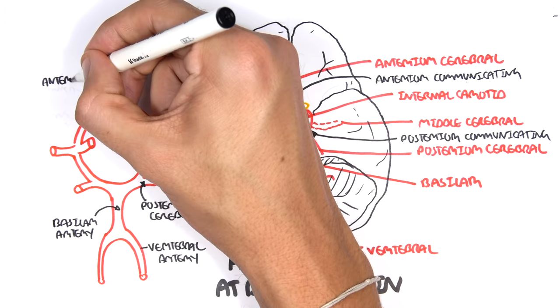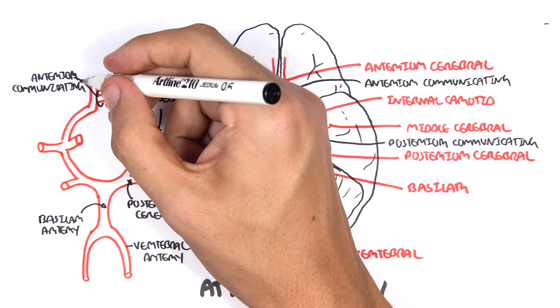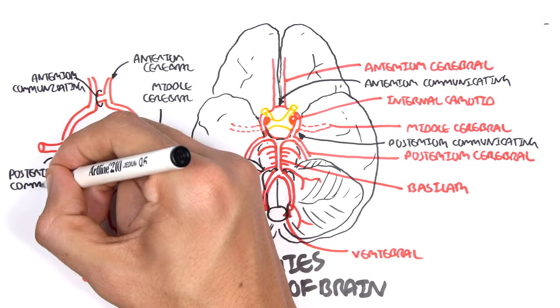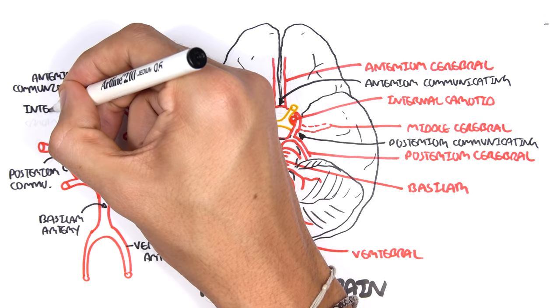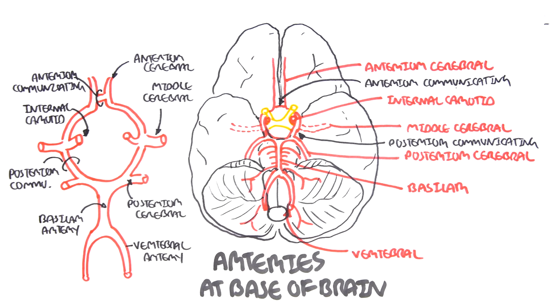The anterior cerebral arteries are connected to each other by the anterior communicating artery, and here is your posterior communicating artery. The internal carotid artery comes in and joins the circle of Willis — and that is your circle of Willis, the round structure. It has variations, but these are the main arteries found in the circle of Willis.